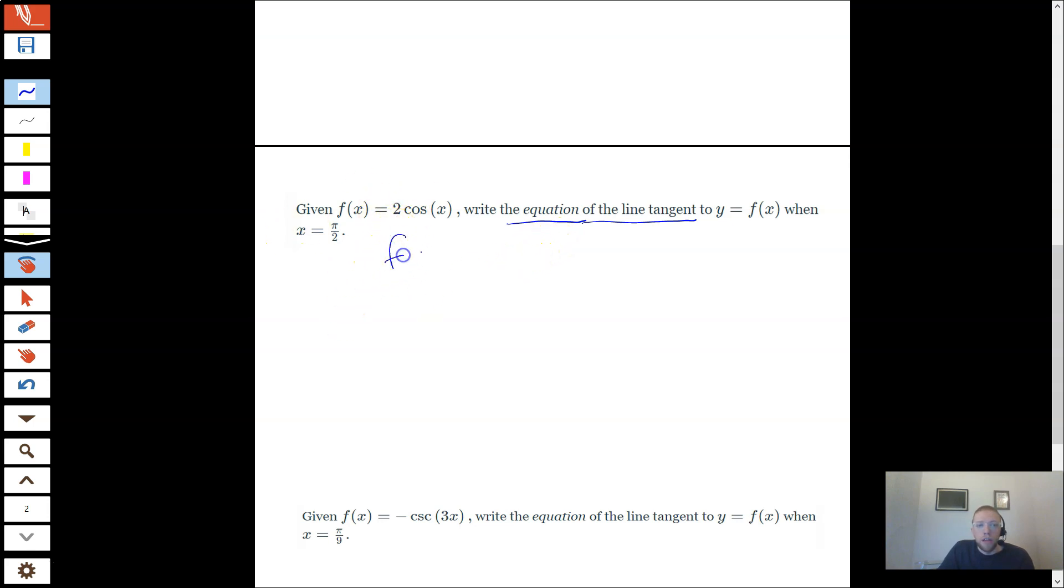First step is going to be find the derivative of f. Anytime you see tangent line, you think derivative. So f'(x) is going to be 2 times the derivative of cosine, which is negative sine. So I'm going to say negative 2sin(x) is my derivative.